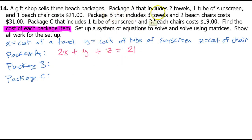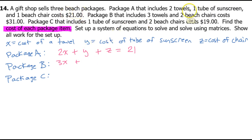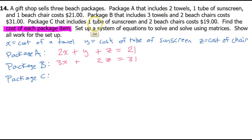Package B has three towels and two beach chairs — no sunscreen — costing $31, so: 3X + 0Y + 2Z = 31. Package C has one tube of sunscreen and two beach chairs — no towels — costing $19, so: 0X + Y + 2Z = 19. Watch out for the missing terms — they become zero coefficients.